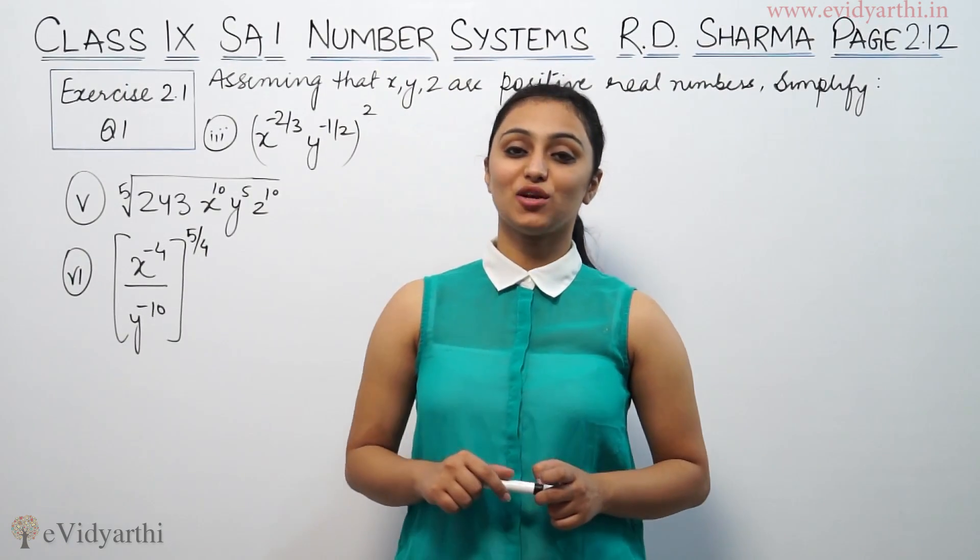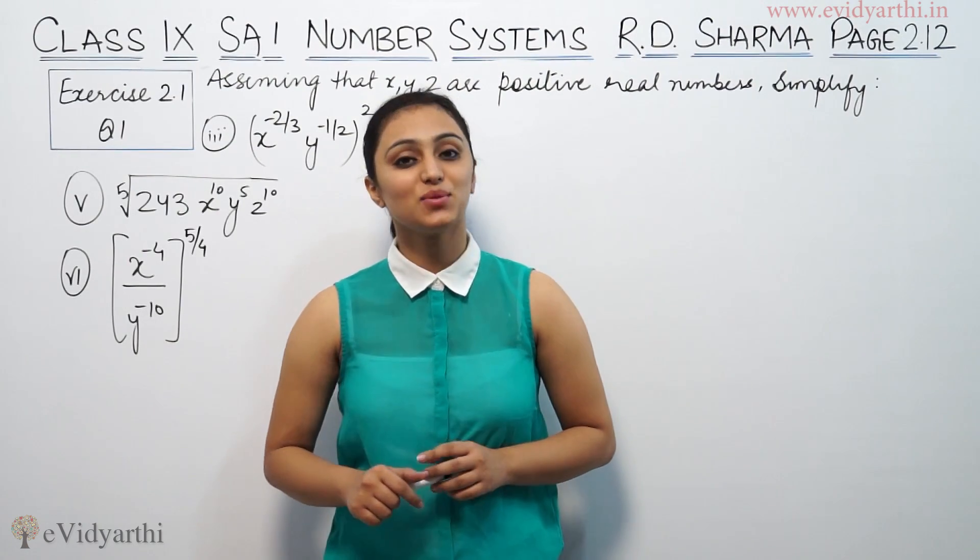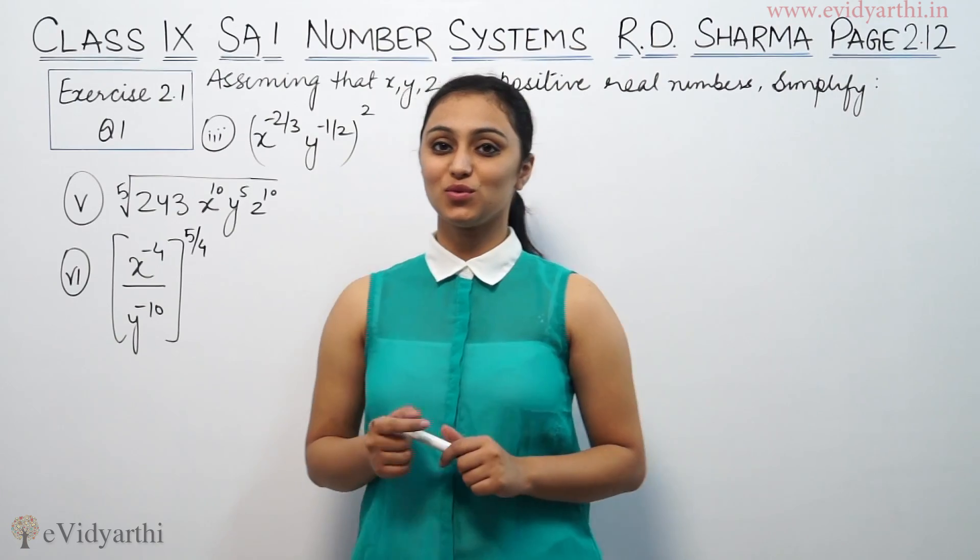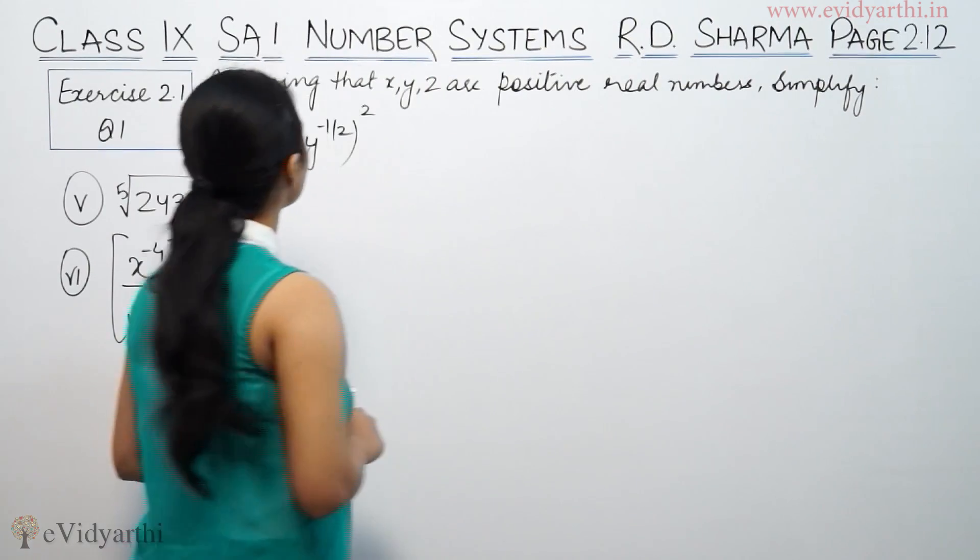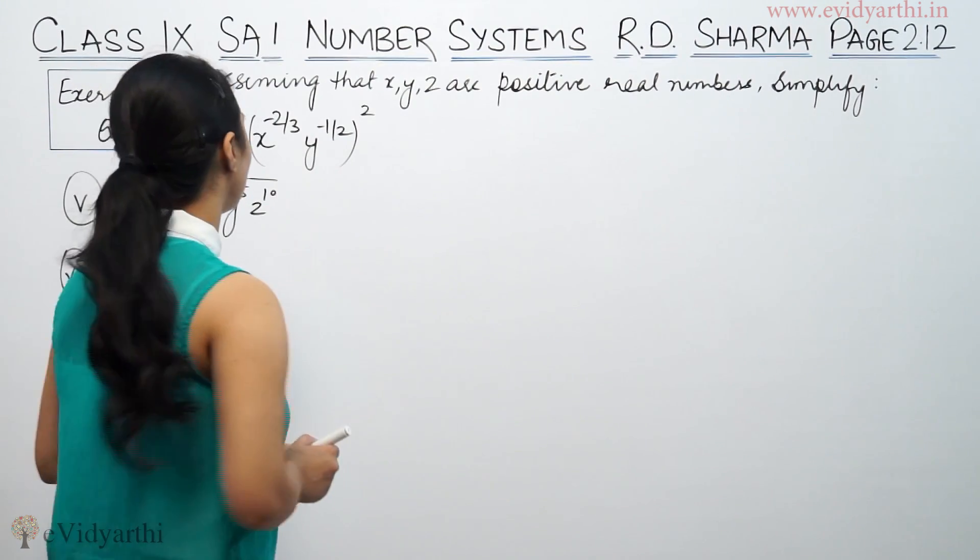Hi, this is Khushbu with another question of number systems. This is question number 1 from exercise 2.1, page 212 from R.D. Sharma. This says, assuming that X, Y, Z are positive real numbers, let's simplify it. We have three parts given.